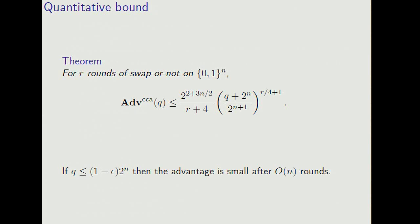So now let me state our concrete bounds. Well, I've given the formula here for the advantage. I just did that so you can see that the constants that we get aren't very big. The summary is down below, and it says that if the number of queries is at most 1 minus epsilon times the size of the domain, then the advantage is small, provided that you do at least big O of N rounds.